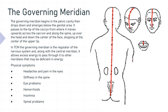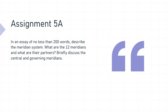We've reached the end of lecture 5a. For assignment 5a, in an essay of no less than 200 words, describe the meridian system, identify the 12 meridians and their partners, and briefly discuss the central and governing meridians. This assignment is due by 11:55 p.m. this coming Sunday. If you have any difficulty with this assignment, please shoot me an email or a text message. My office hours are on Thursdays from 4 to 6 p.m. With that, I will see you in the next lecture.